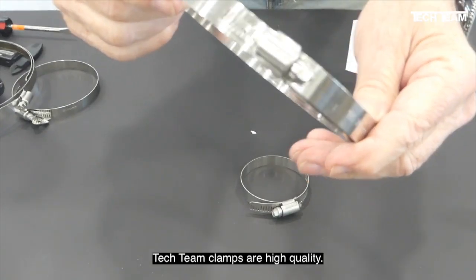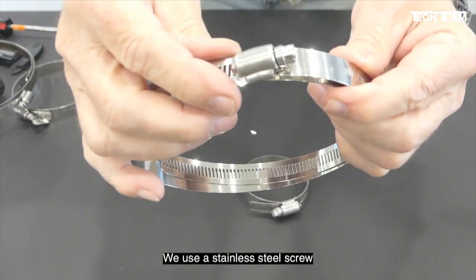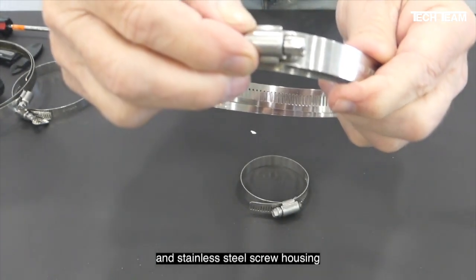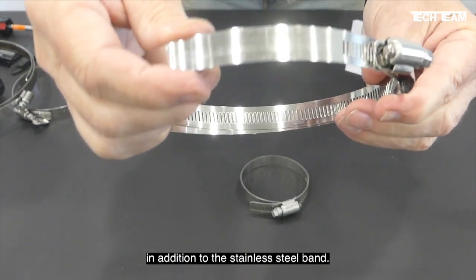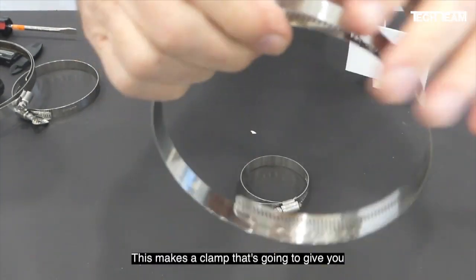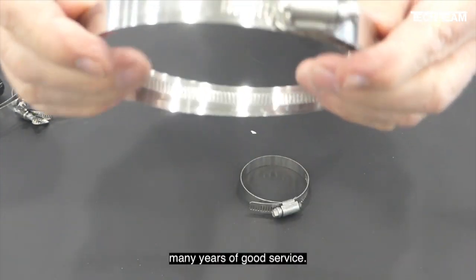Tech Team clamps are high quality. We use a stainless steel screw and stainless steel screw housing in addition to the stainless steel band. This makes a clamp that's going to give you many years of good service.